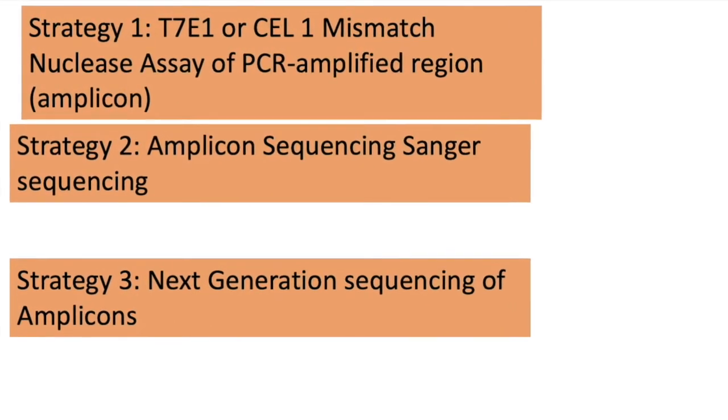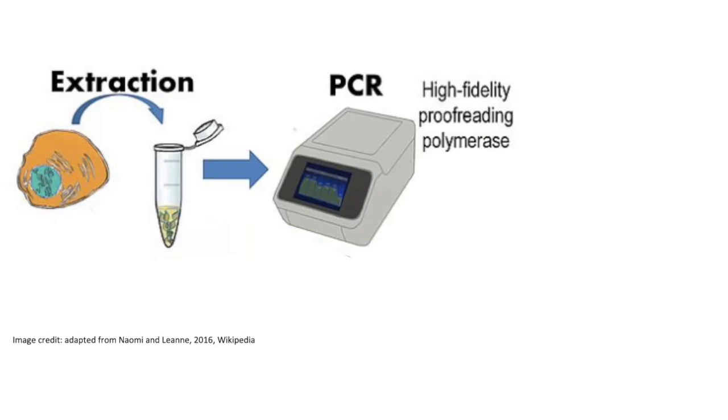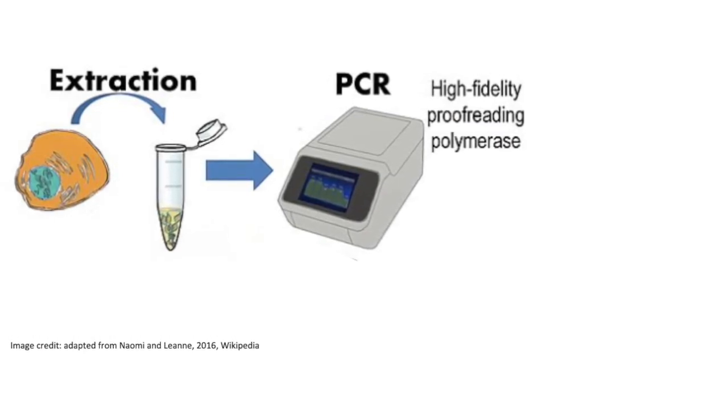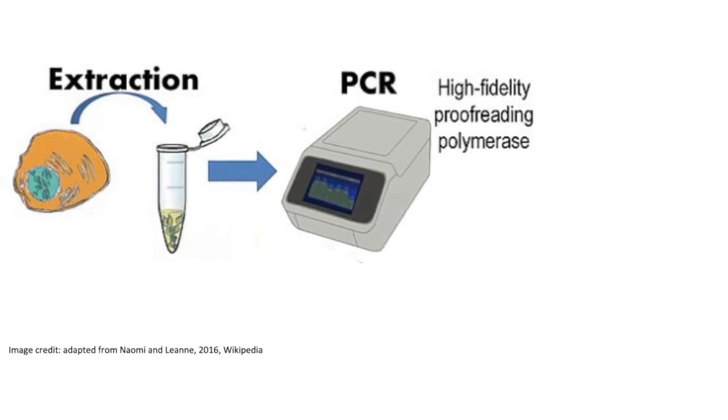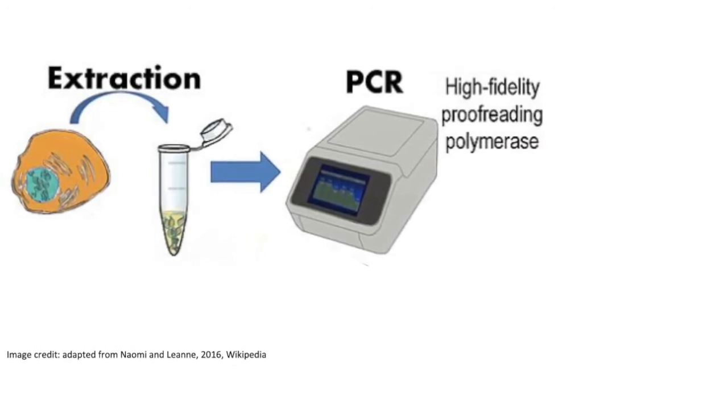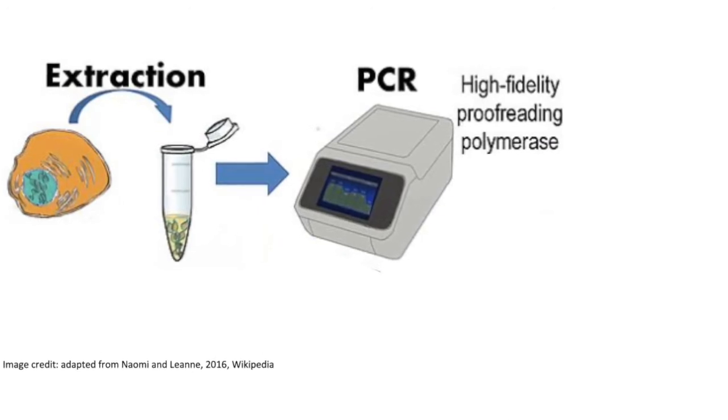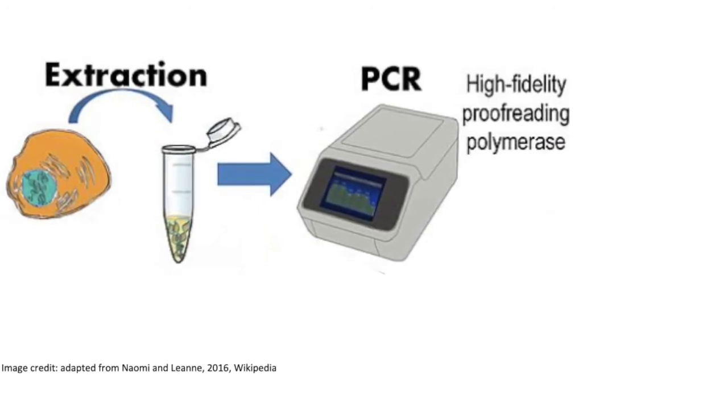So here are several strategies you can do for screening the cells to see that they have a homozygous or biallelic mutation. Keep in mind in either strategy that we're about to look at, you will first PCR amplify the region that you targeted. You'll extract genomic DNA from the cell or the tissue, and you will then PCR amplify the region that you targeted.